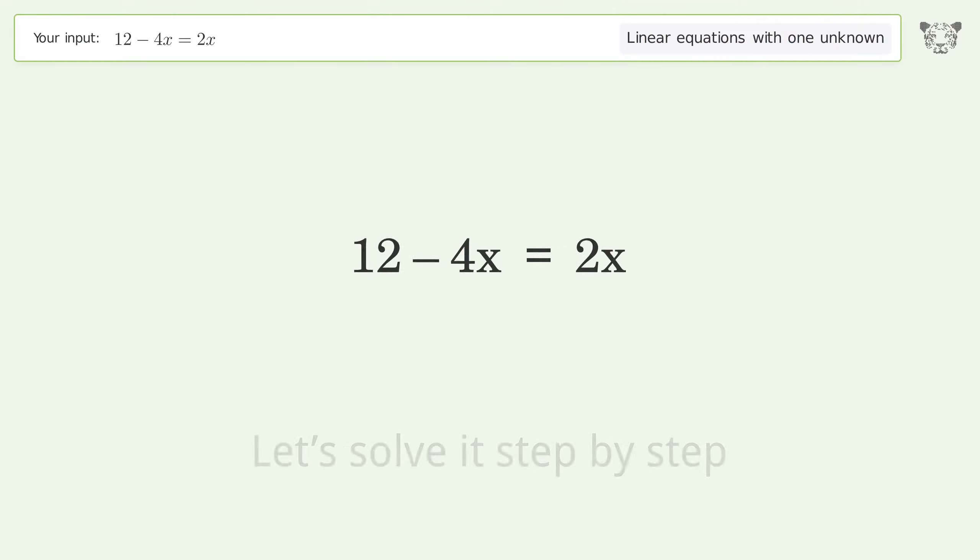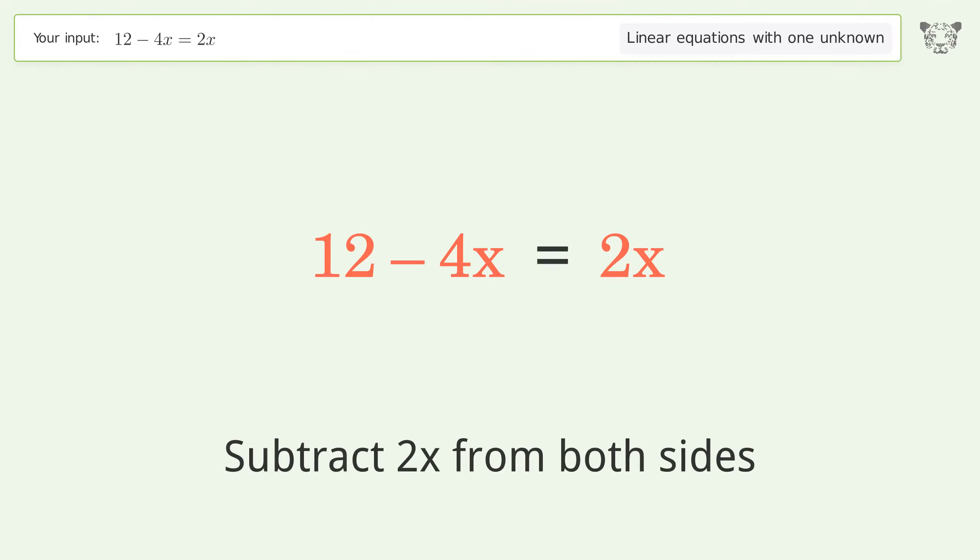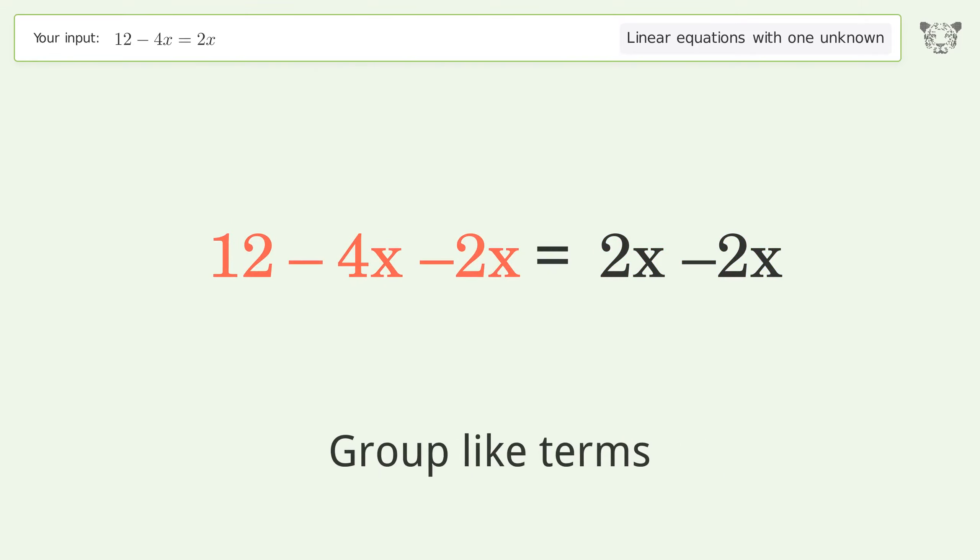Let's solve it step by step. Group all x terms on the left side of the equation. Subtract 2x from both sides. Group like terms.